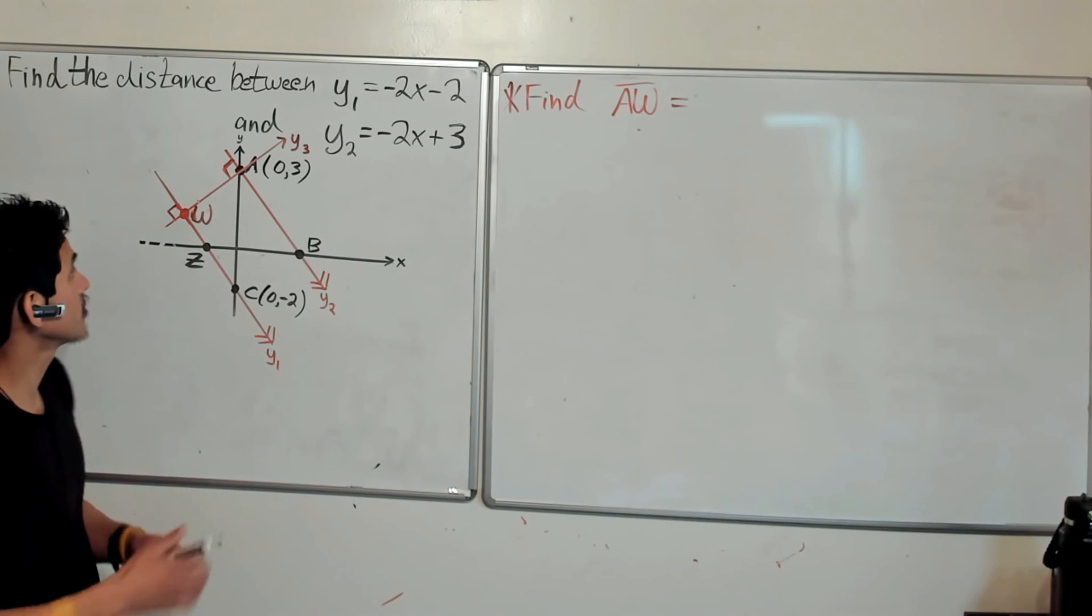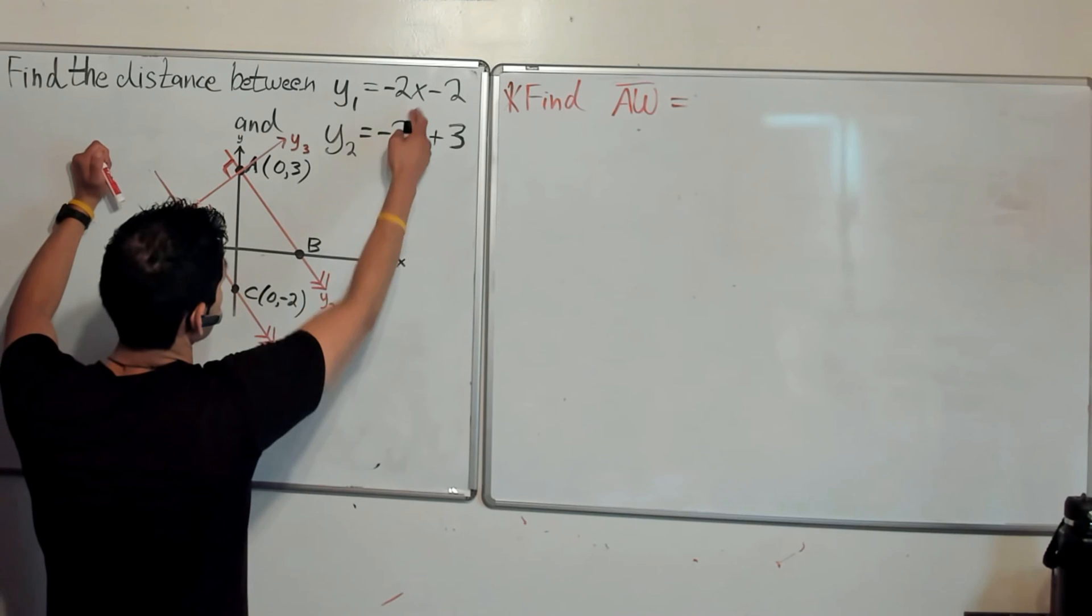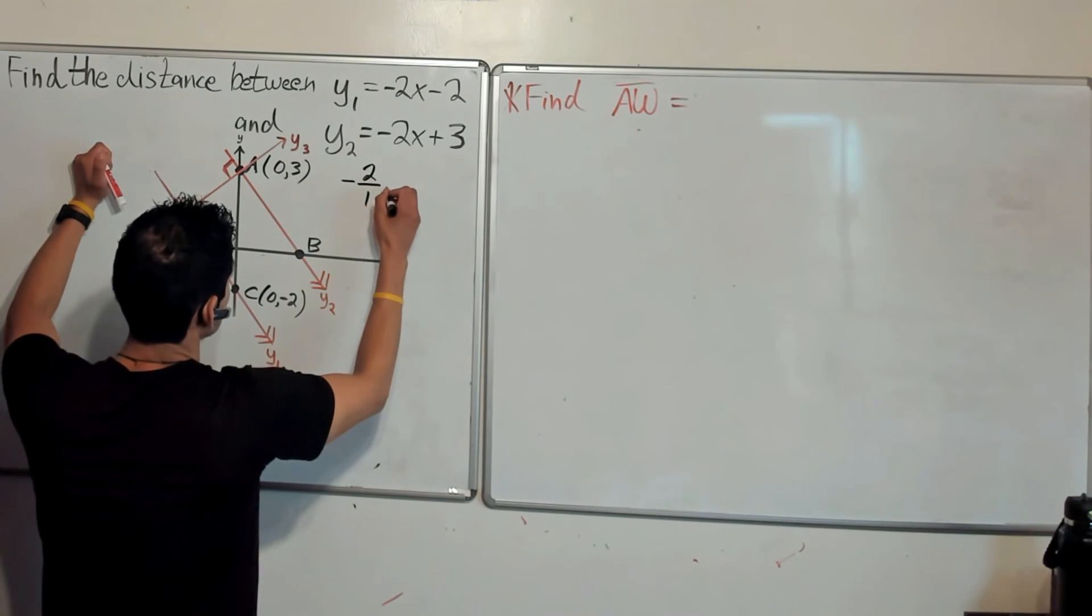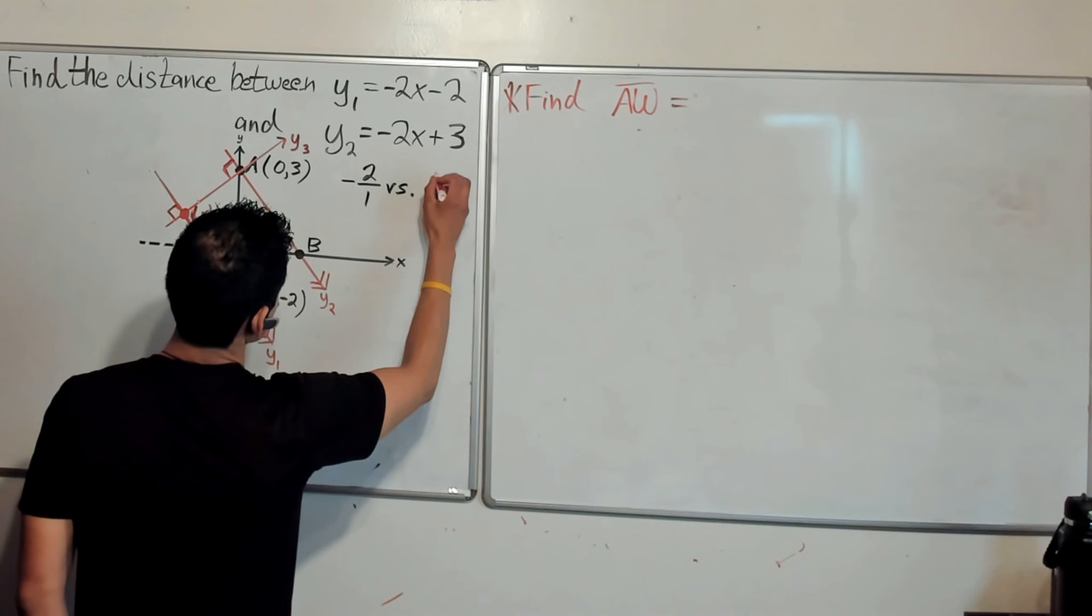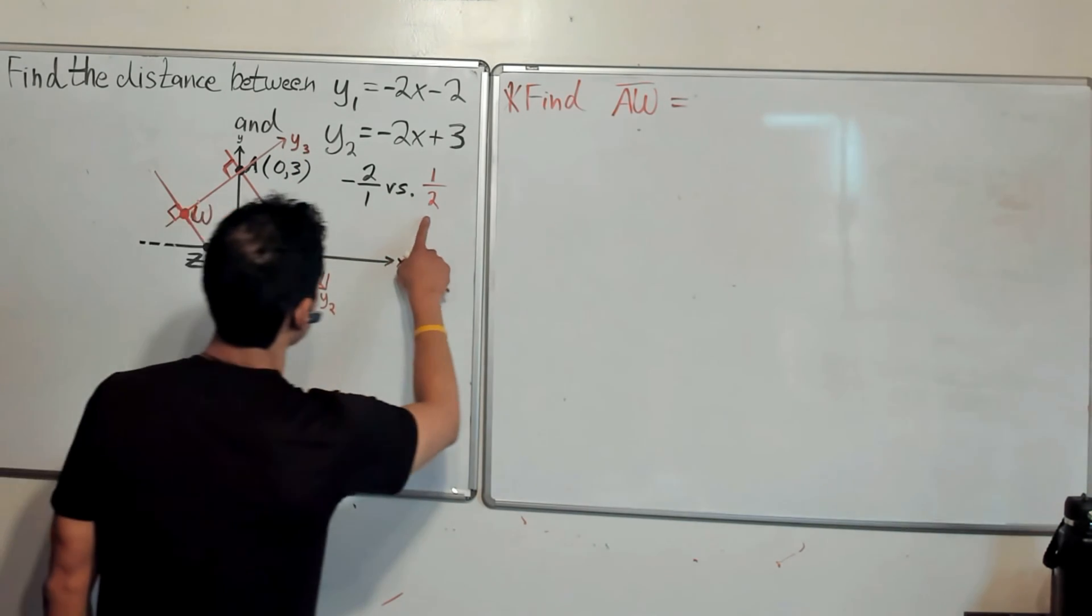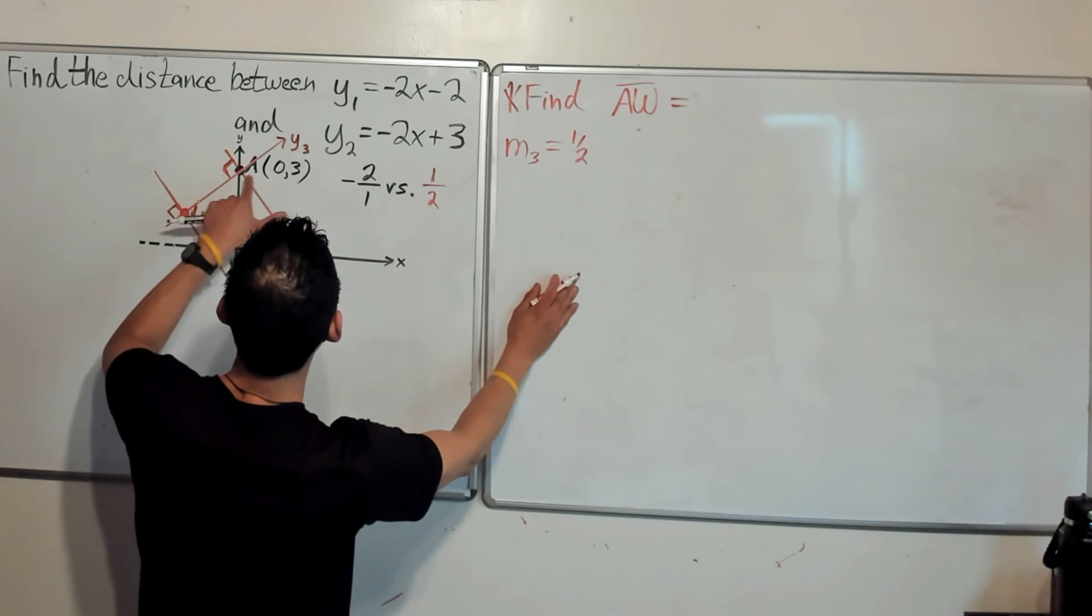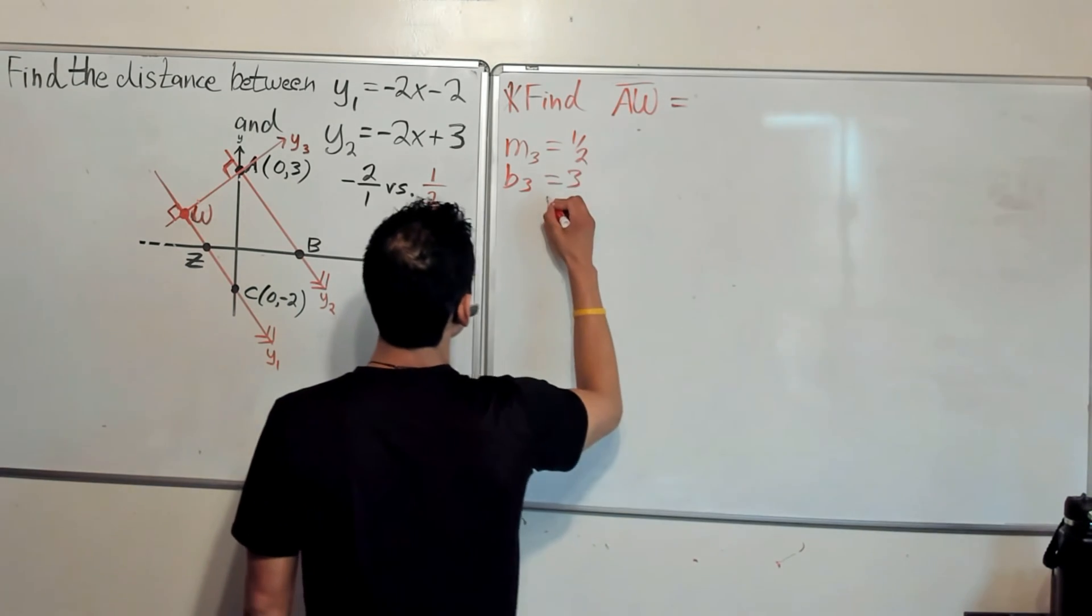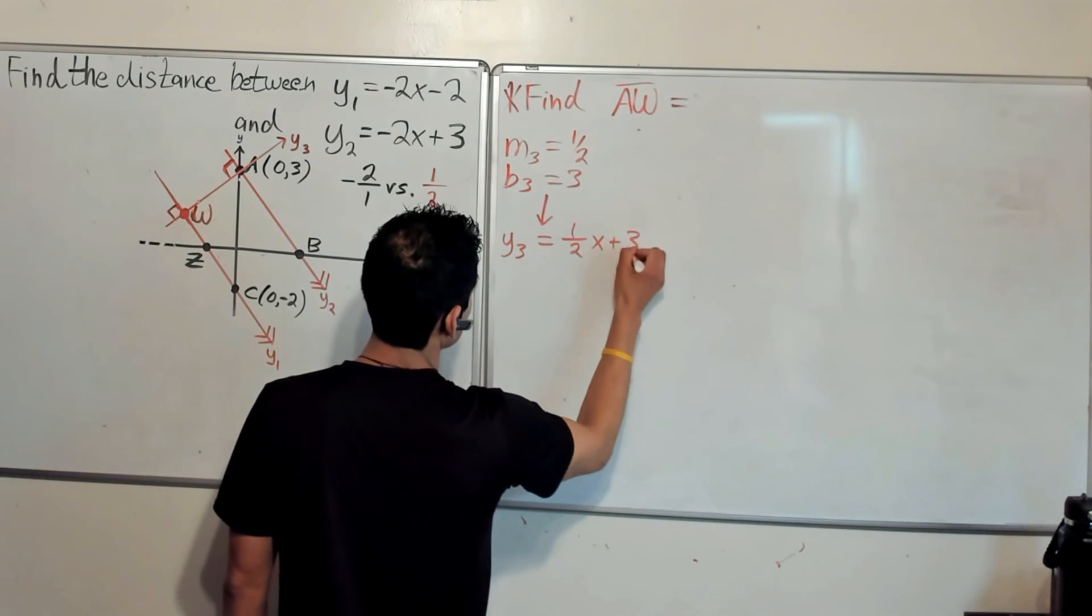So we are going to start off by finding the equation for y3. y3 is going to be perpendicular to y1 and y2. The slopes of y1 and y2 are negative 2, so negative 2 over 1. What's the opposite reciprocal of negative 2 over 1? Yeah that's right, positive 1 over 2. So the slope of y3 will be 1 half, I'm going to call it m3 for the slope, and the y intercept is 3 because again it goes through point A, so b3 is 3. And so together we get the equation for y3 equal to 1 half x plus 3.